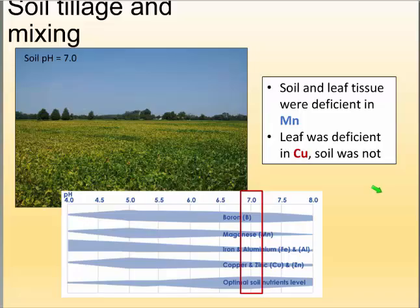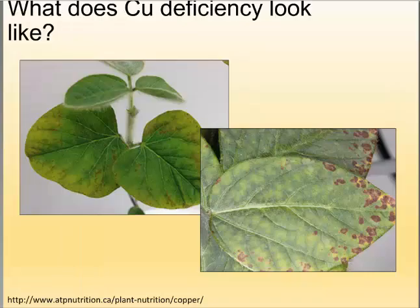The soil and leaf tissue samples from this field showed manganese deficiency, but what was also interesting was that the leaf tissue was also deficient in copper. The soil tests showed plenty of copper when extracted. The problem was that at pH 7, copper was completely in solid form — unavailable to the plant. By testing both soil and leaves, we could see that manganese was deficient in both, but copper was deficient in the plant while the soil appeared adequate. That's why it's a good idea, when you see a deficiency, to test both soil and leaves to understand the full picture.